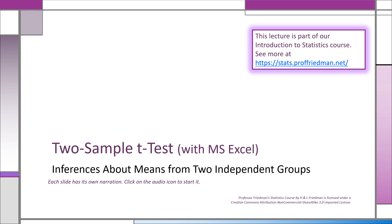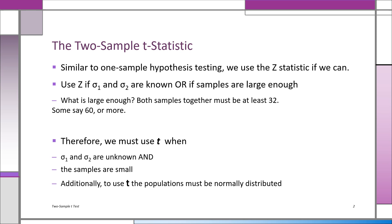Welcome to our lecture about the two-sample t-test. You're going to learn how to make inferences about means from two separate populations. We've already learned to use the z-statistic for inferences about means of two groups. Now we're going to learn to do the same thing with the t-statistic.